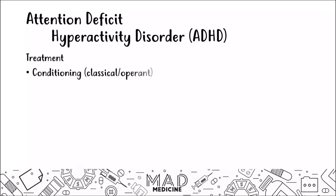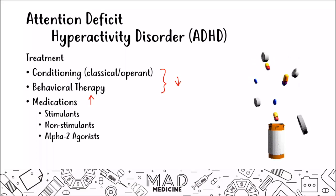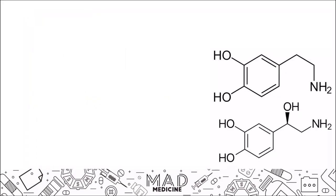These treatments include cognitive conditioning, such as classical conditioning or operant conditioning — training someone to not be hyperactive by giving them rewards or by punishing them. You could also do behavioral therapy. However, the efficacy and success rate of this is kind of low compared to medications. Medications are very helpful for patients with ADHD, and you have three main classes: stimulants, non-stimulants, and alpha-2 agonists.